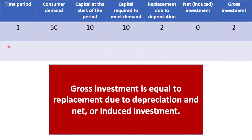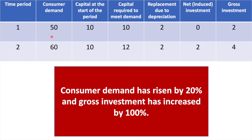In year 2, consumer demand rises by 20% to 60 units — a change of 10 units from the previous year. The firm currently has 10 units of capital, as they wore down 2 machines but replaced them. This year, they need 12 units of capital to produce 60 units. They will need to replace 2 machines due to depreciation, but to meet rising demand, they also need to purchase 2 new machines, bringing gross investment to 4 units — an increase of 100% from the previous year. We can see that the proportional increase in investment of 100% is significantly larger than the proportional increase in consumer demand of 20%. This is the accelerator effect in action.